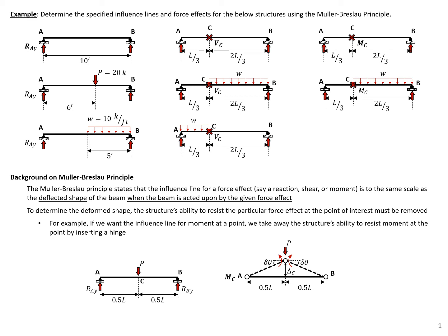In this example problem, we're going to determine the specified influence lines and force effects for the below structures using the Mueller-Breslau principle. We're going to look at a simply supported beam, and first look at the reaction at support A, then the shear at point C, and then the moment at point C.